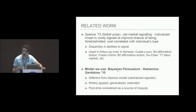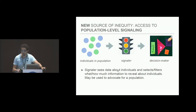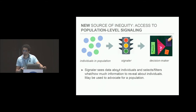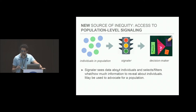There has been a lot of work in economics on information asymmetries, signaling, and the power that information confers. In particular, in 2010, Kamenika and Gensko introduced a widely studied model of Bayesian persuasion, which is the model we focus on in this paper. In signaling, you have individuals in a population, a decision maker that must make decisions about those individuals, and a signaller in the middle. The signaller sees information and data about the individuals and selects what information to reveal to the decision maker — it may do so in a way that advocates for a population.